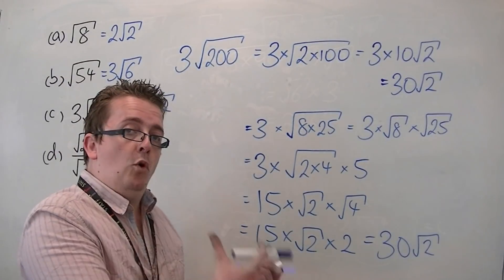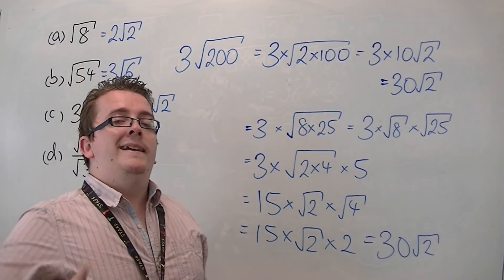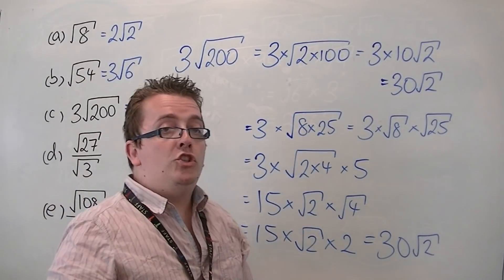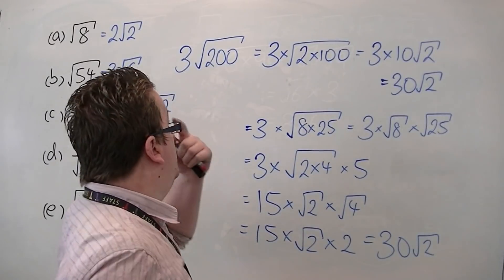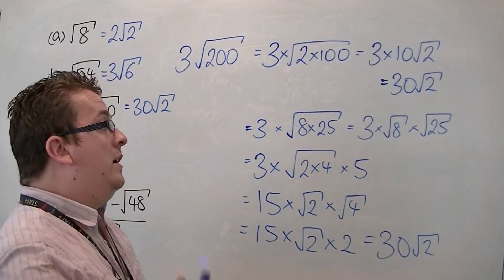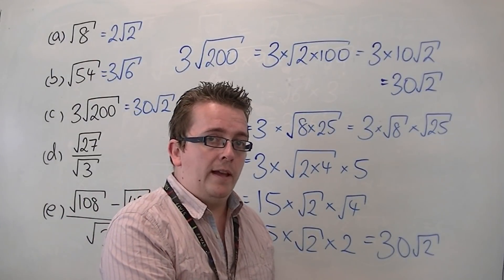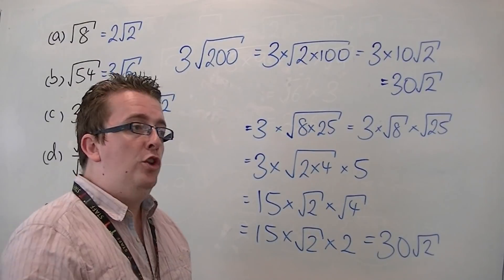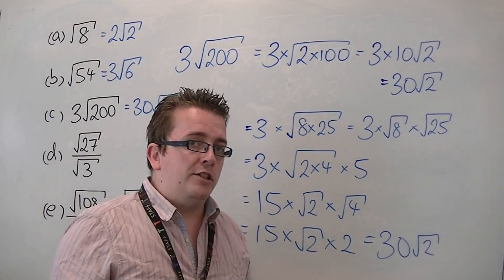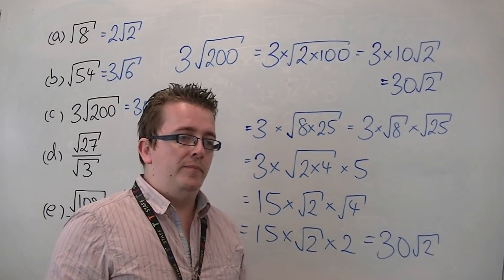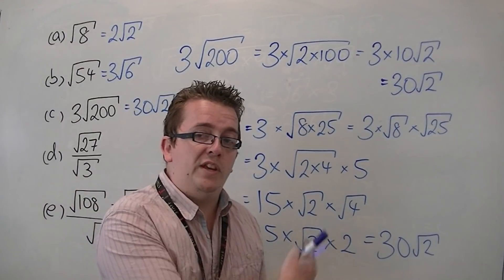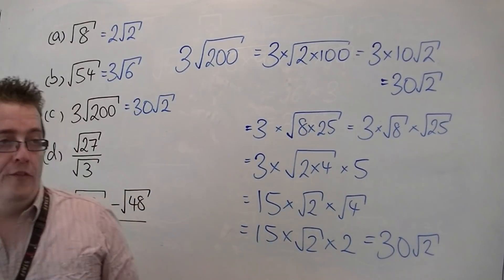Obviously, this is a much more long-winded process. But it does show you that if you miss a larger square number going into this number here under the square root sign, then you could still get to the right answer. You haven't gone wrong. You're not looking for a specific square number. If you can find the larger square number, it will make your life easier. But if you don't, then you can still work through the process, but it's a little bit more fiddly that way.